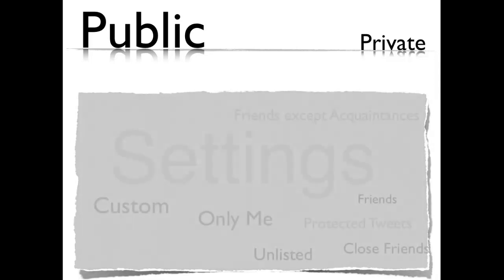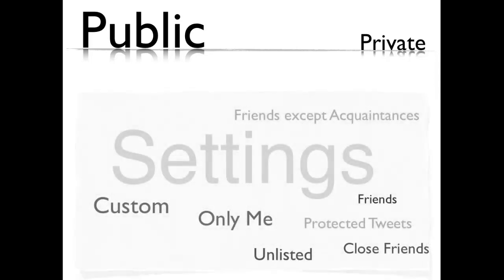Did you know that when you first created your Facebook account, all of your posts were public by default unless you chose to limit their visibility? Did you know that any video you uploaded on YouTube was set as public by default and that anyone could view it until you changed the privacy settings? Did you know that when you first signed up for Twitter, your tweets were public by default unless you decided to make them protected tweets through modifying your account settings?